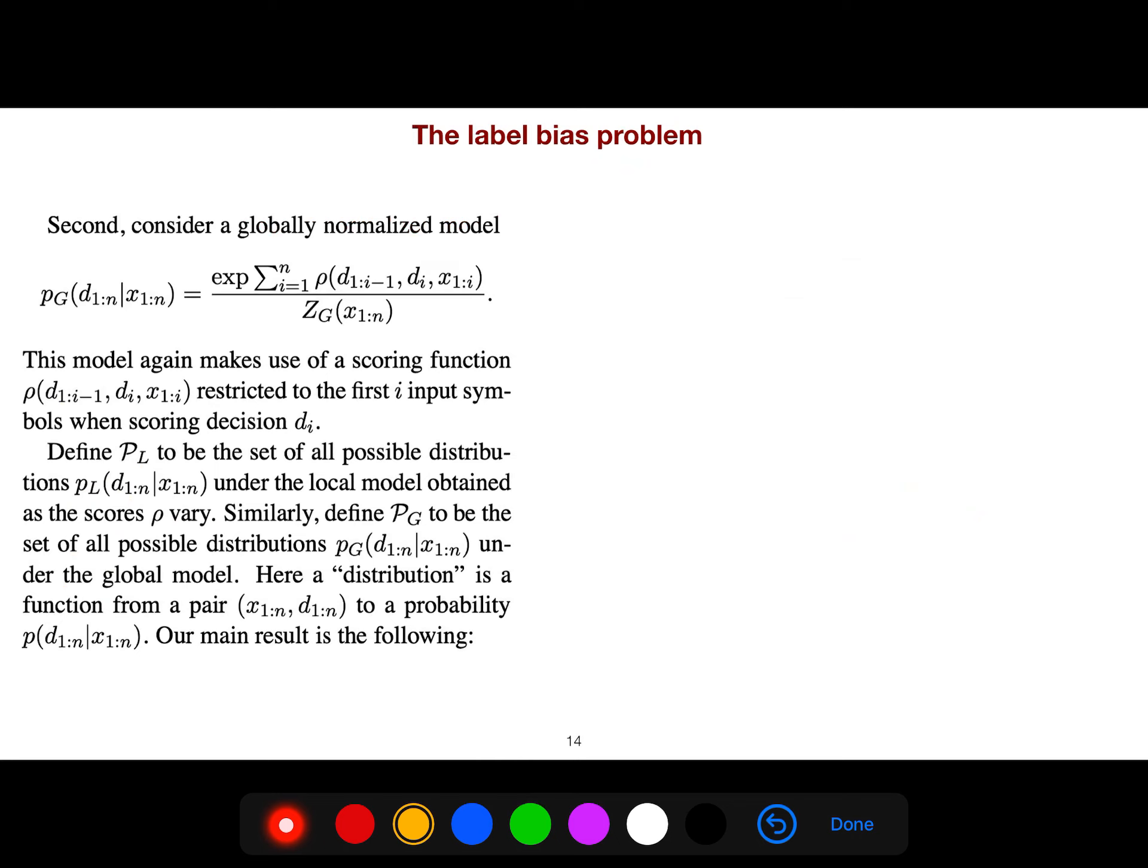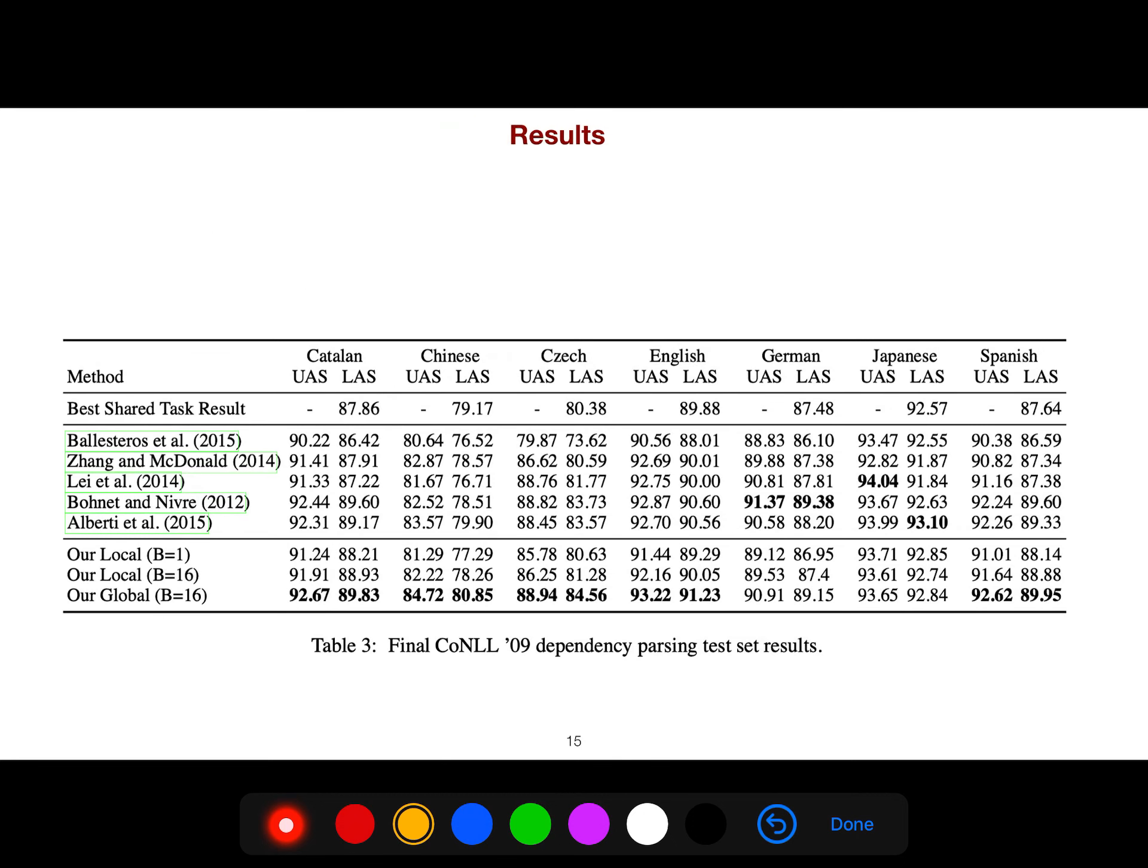These are the results. You see for the local versus global, for beam of 16 we have improvement. English is always easy, you see, always more than all the rest of them. 91, 93.